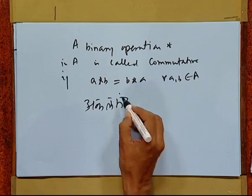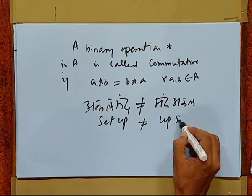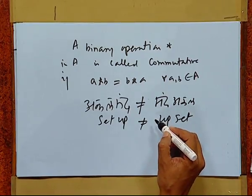Even in life, at times this law fails. For instance, consider the word 'setup' — if you reverse it, it becomes something different. They are not equal. Similarly, 'setup' is not equal to 'upset'. It means whenever reversing the two elements in an operation makes no difference, the operation is called commutative; otherwise it is not commutative.